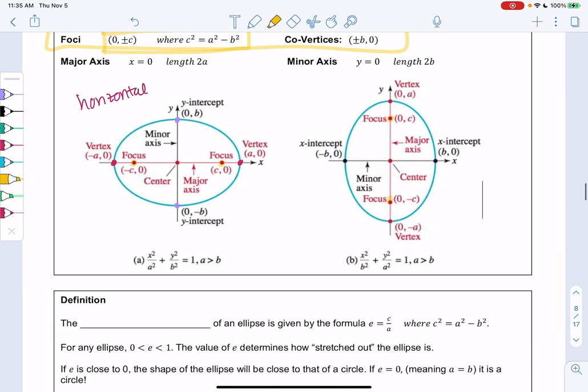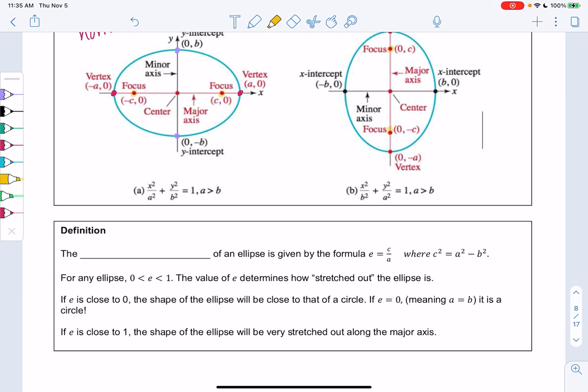So one more formula, definition, and then we'll jump into an example. So the eccentricity, kind of a messy word, eccentricity of an ellipse is given by the formula e equals c over a, same c as the foci, c squared equals a squared minus b squared.